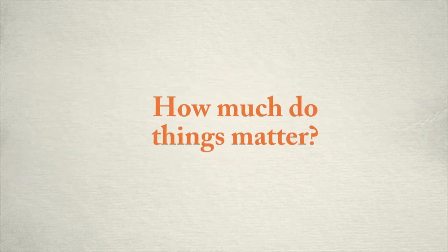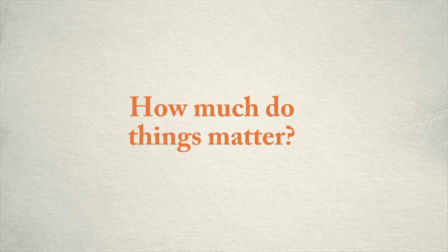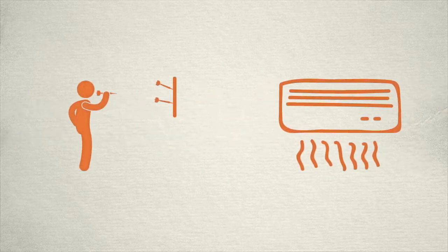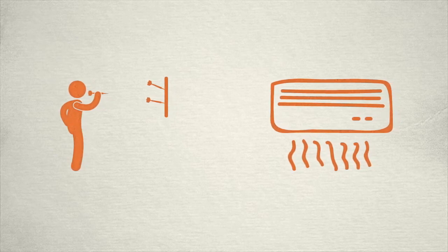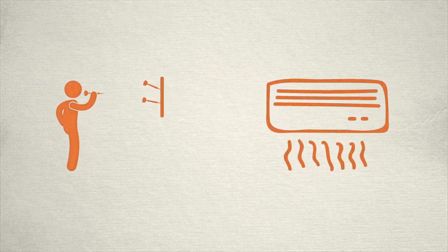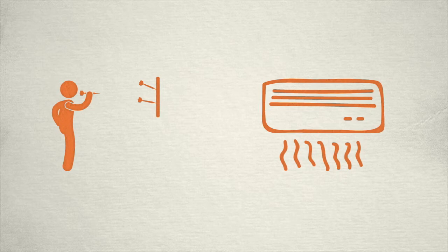The model can also tell us how much a particular variable matters. For instance, maybe the skill of the dart thrower matters a ton, the air conditioner only matters a little. A good dart thrower is still going to throw well whether it's breezy or not.